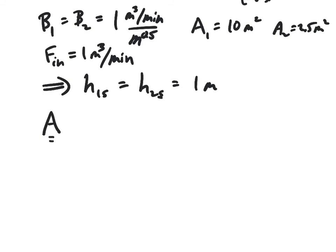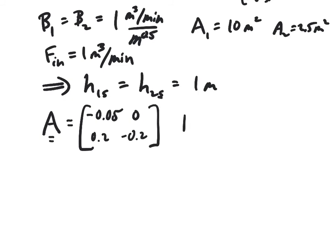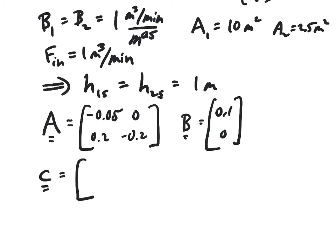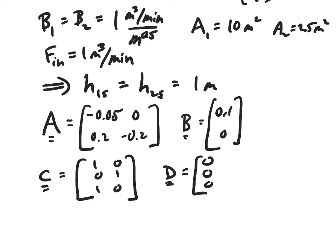Plugging these values into all the matrices, the state-space A matrix is [−0.05, 0; 0.2, −0.2]. The input matrix B is [0.1; 0]. The C matrix is [1, 0; 0, 1; 1, 0]. And the D matrix is simply [0; 0; 0].